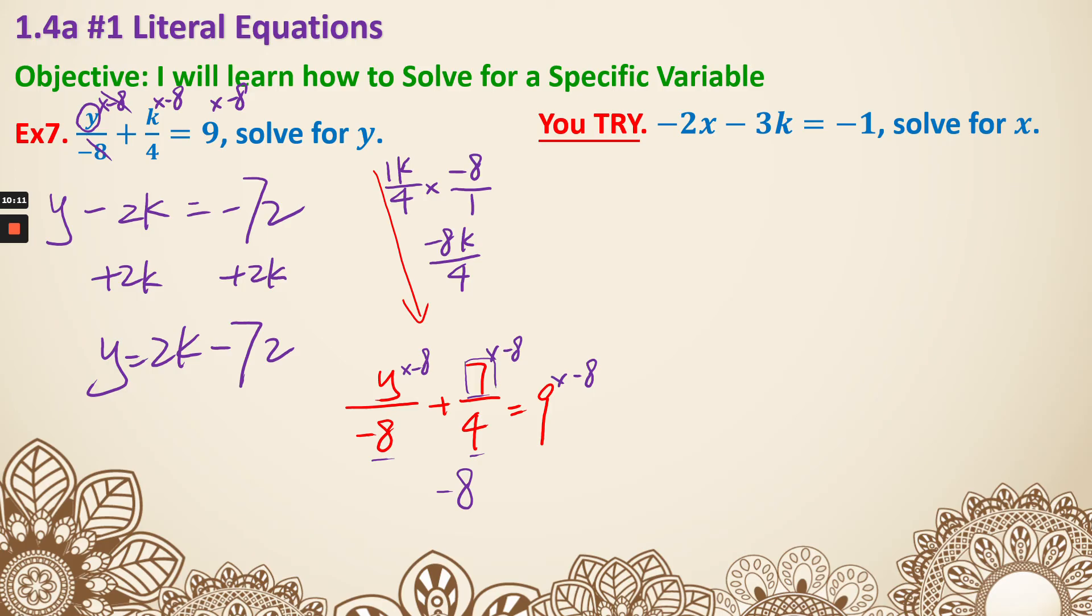Next, example number 8. I'm going to add 3k on both sides. So I got -2x = 3k - 1. Divide both sides by -2. A lot of you might think, oh, I just want to divide by -2. So I'm just going to write it that way, the whole thing divided by -2. That gives me this, which is totally fine.